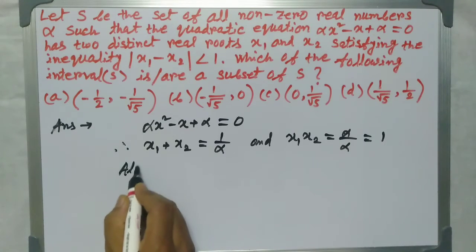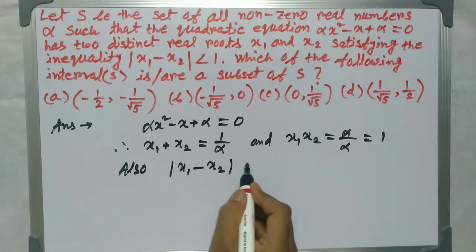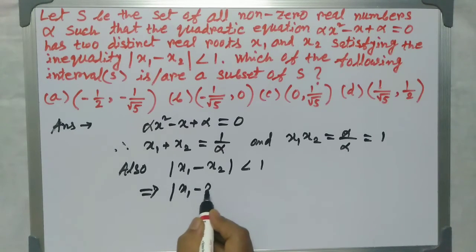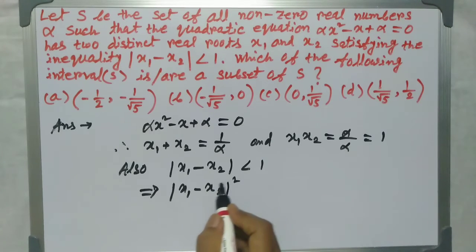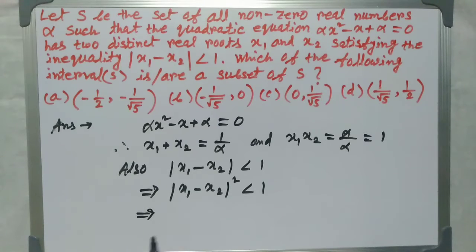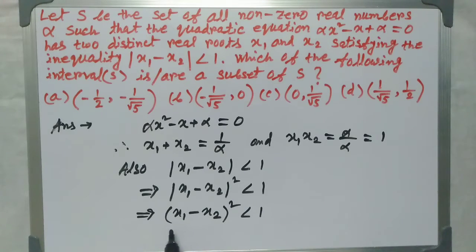From the condition |x1 - x2| < 1, squaring both sides gives (x1 - x2)² < 1.